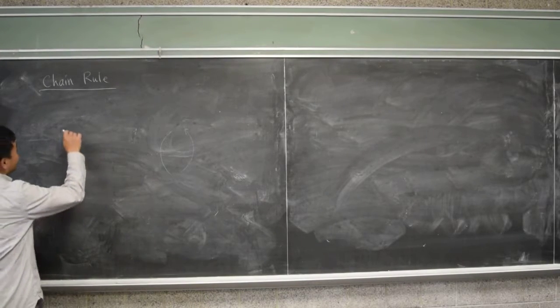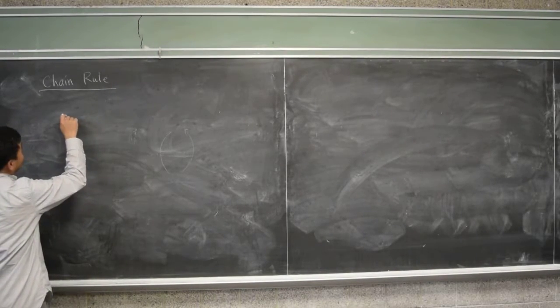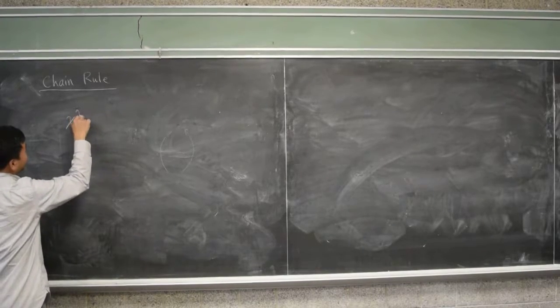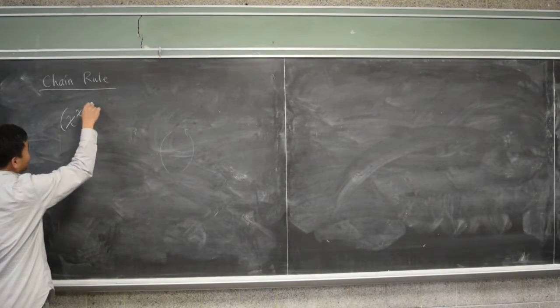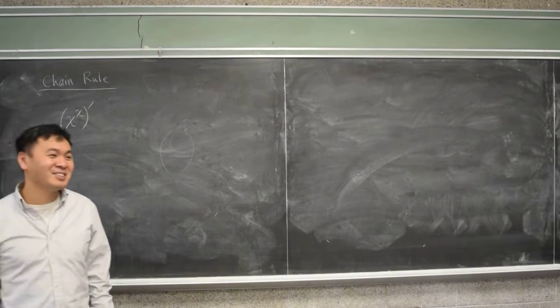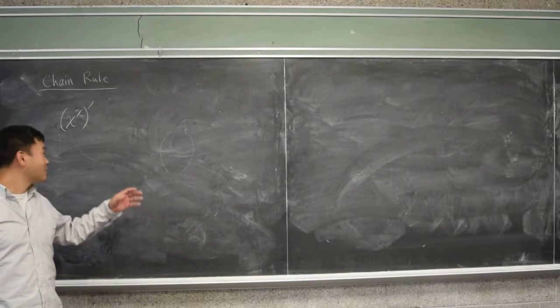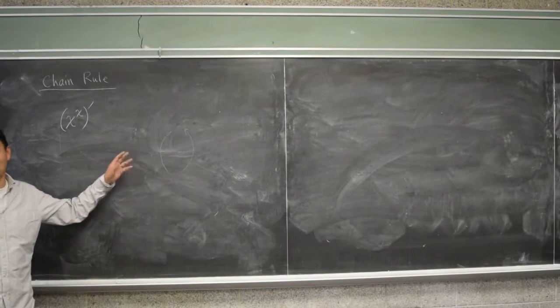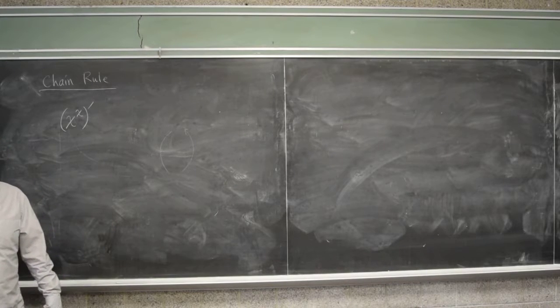Here's an interesting question in Calc 1 that you probably didn't solve. What's x to the x power prime? Does anyone know how to do this? It's probably hidden in some exercise in that gigantic calculus 1.